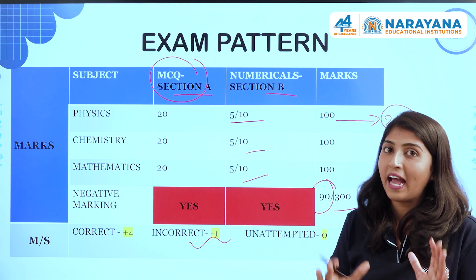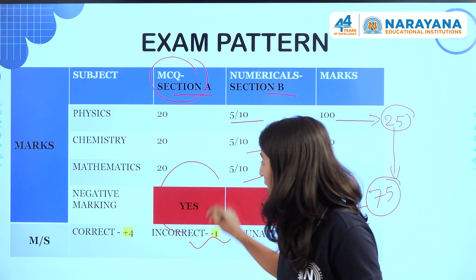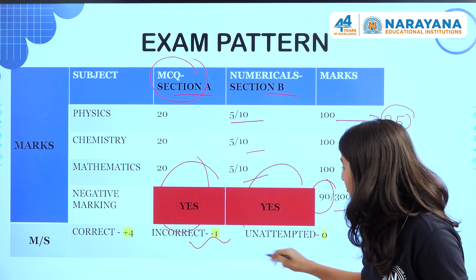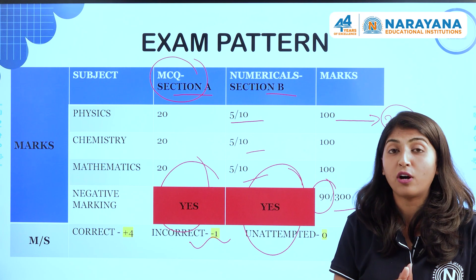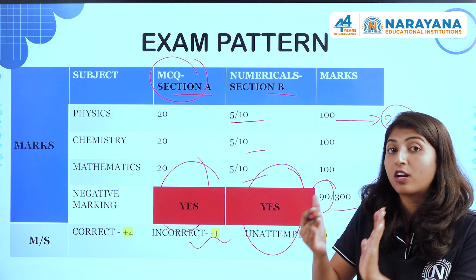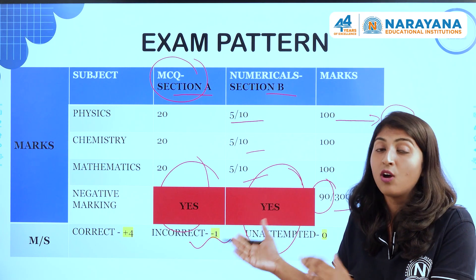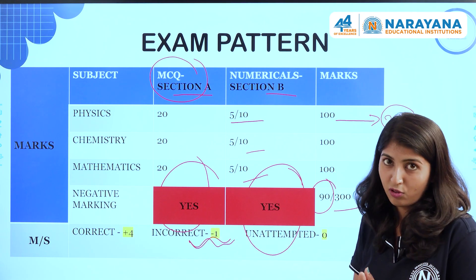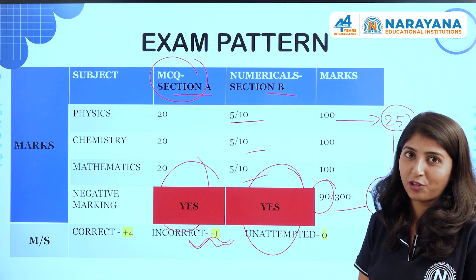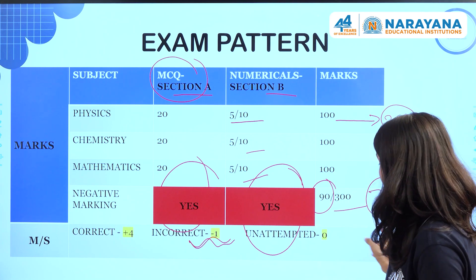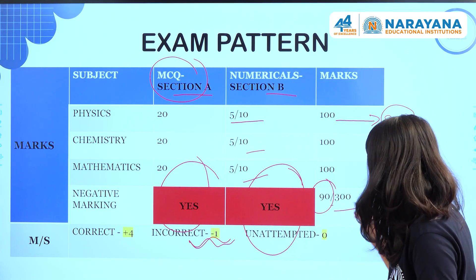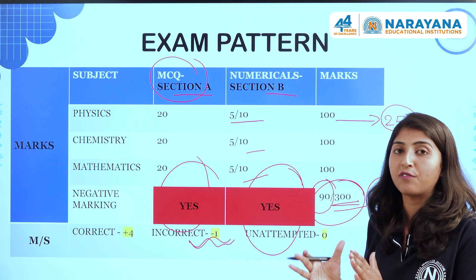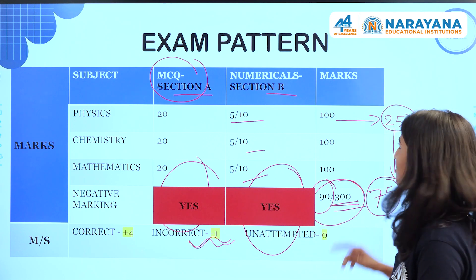Importantly, while previously only the MCQ section had negative marking, this time the numerical section also carries negative marking. So be very sure about your answer before attempting — an incorrect response will cost you one mark. The total marks remain 300, with 75 questions to be attempted out of 90.